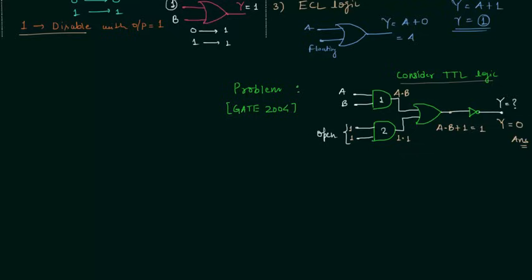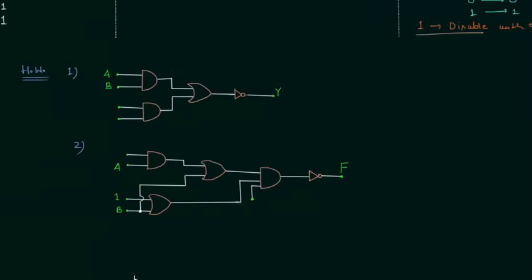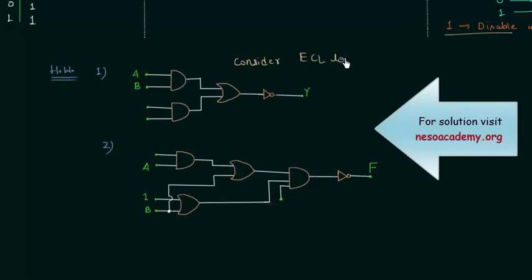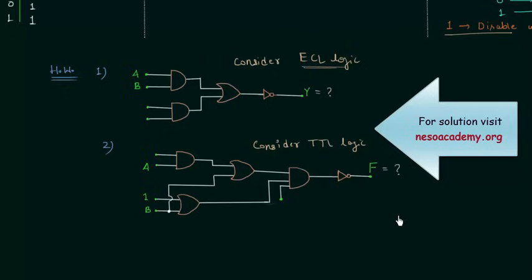Now we will move to homework problems. In the first homework problem, you have to consider ECL logic and find output Y. In the second homework problem, you have to consider TTL logic and find output F. This is all for this lecture — see you in the next one.